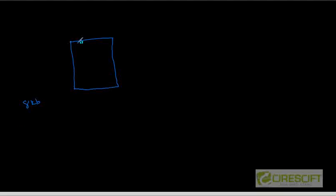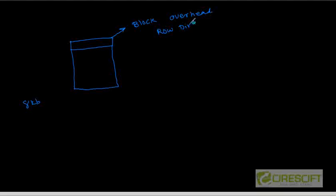This is a typical data block and it can come up with 8KB, 16KB, 32KB and so on. So let's say this is an 8KB data block. Some space is called block overhead. And in this area we are going to store something called row directories, table directories and then transaction directories.